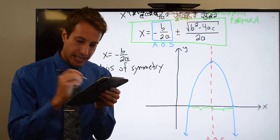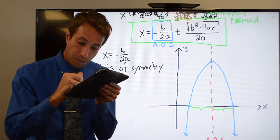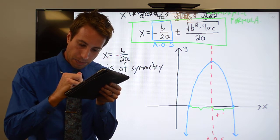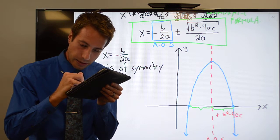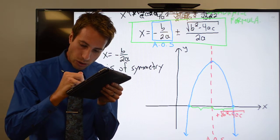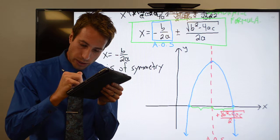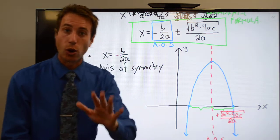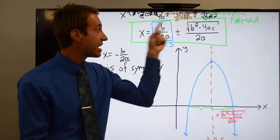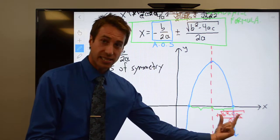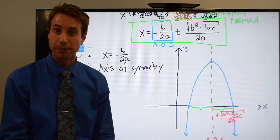It turns out this distance right here is plus square root of b squared minus 4ac all over 2a. So the quadratic formula finds the axis of symmetry and then adds this distance to find that x-intercept.